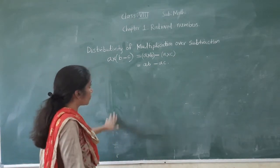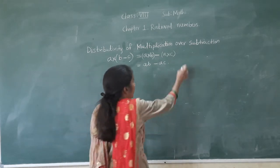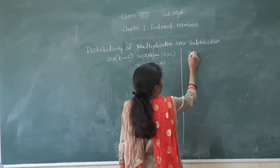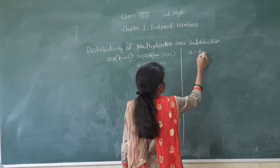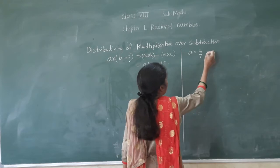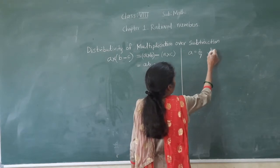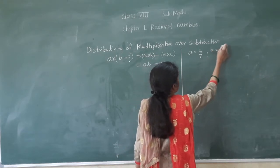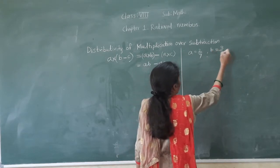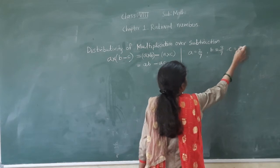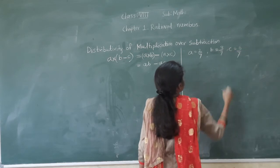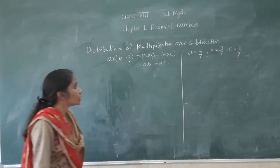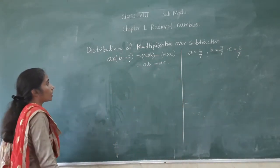Now let's take the elements. I will take A is equal to 2 upon 7, B is equal to 3 upon 7, and C is equal to 5 upon 7. So let's start now.